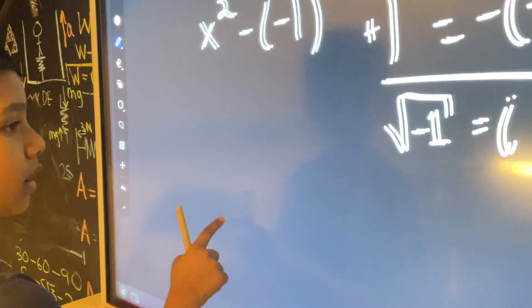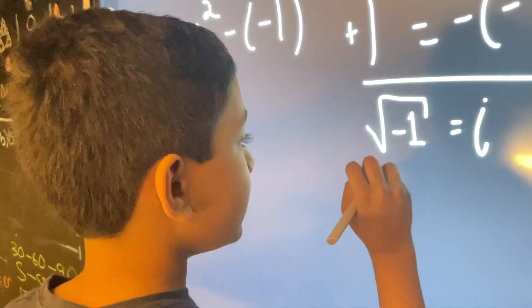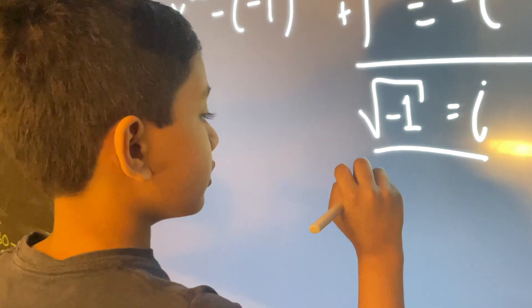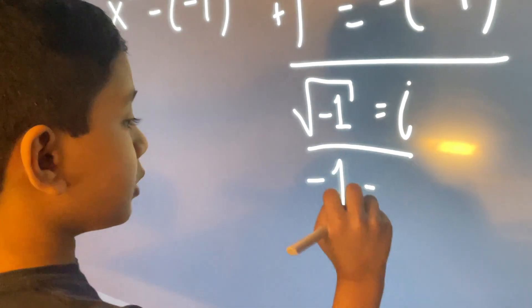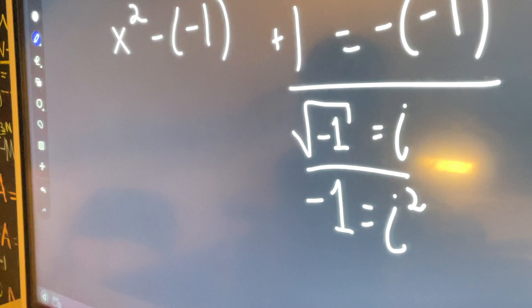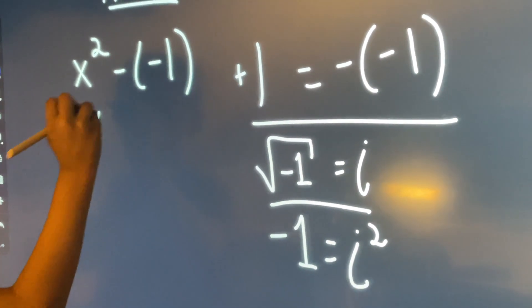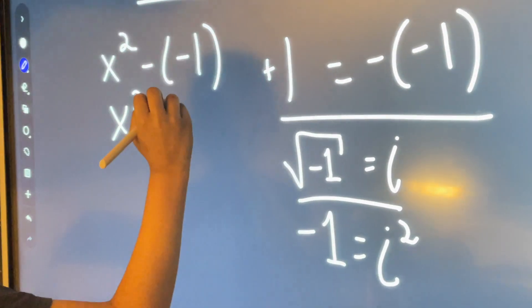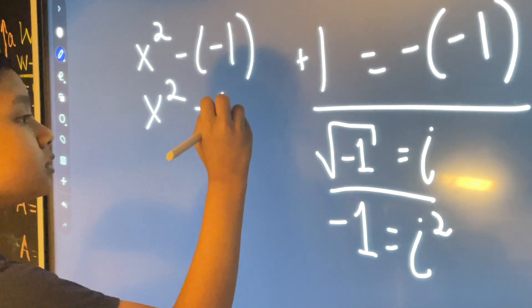So according to that conclusion, that means negative one, if you square both sides, is equal to i squared. Thus, we can substitute the negative one here with i squared.